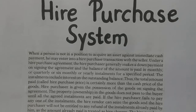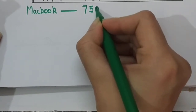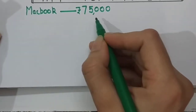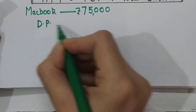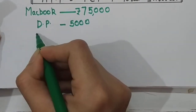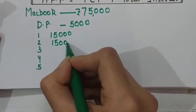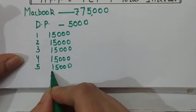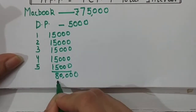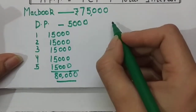Before beginning this topic, let me make you understand what hire purchase is with the help of an example. Imagine I want to purchase a MacBook and I visit a store. The shopkeeper tells me this MacBook will cost 75,000 rupees, but I don't have this lump sum amount. I need the MacBook urgently, so they offer an alternative: pay 5,000 immediately as a down payment and five equal monthly installments of 15,000 each — totaling 80,000 rupees.